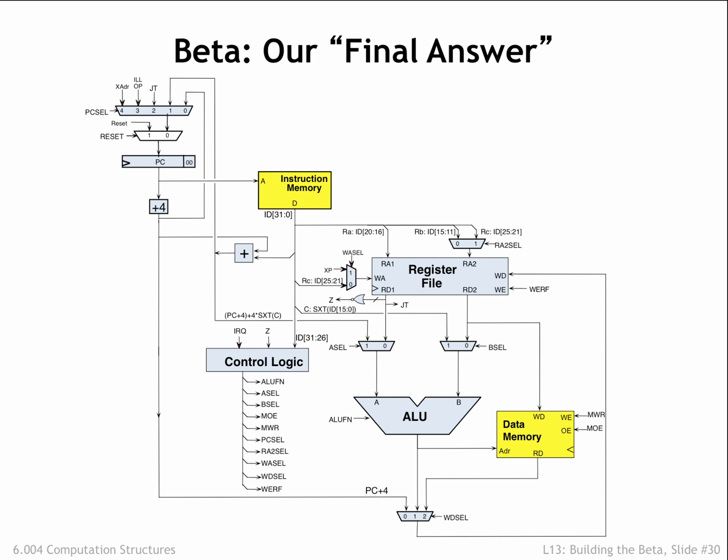The bottom line? The beta hardware might occupy 1 or 2 mm² on a modern integrated circuit, while a modern Intel processor occupies 300-600 mm². Clearly all that extra circuitry is there for a reason. If you're curious, I'd recommend taking a course on advanced processor architecture.